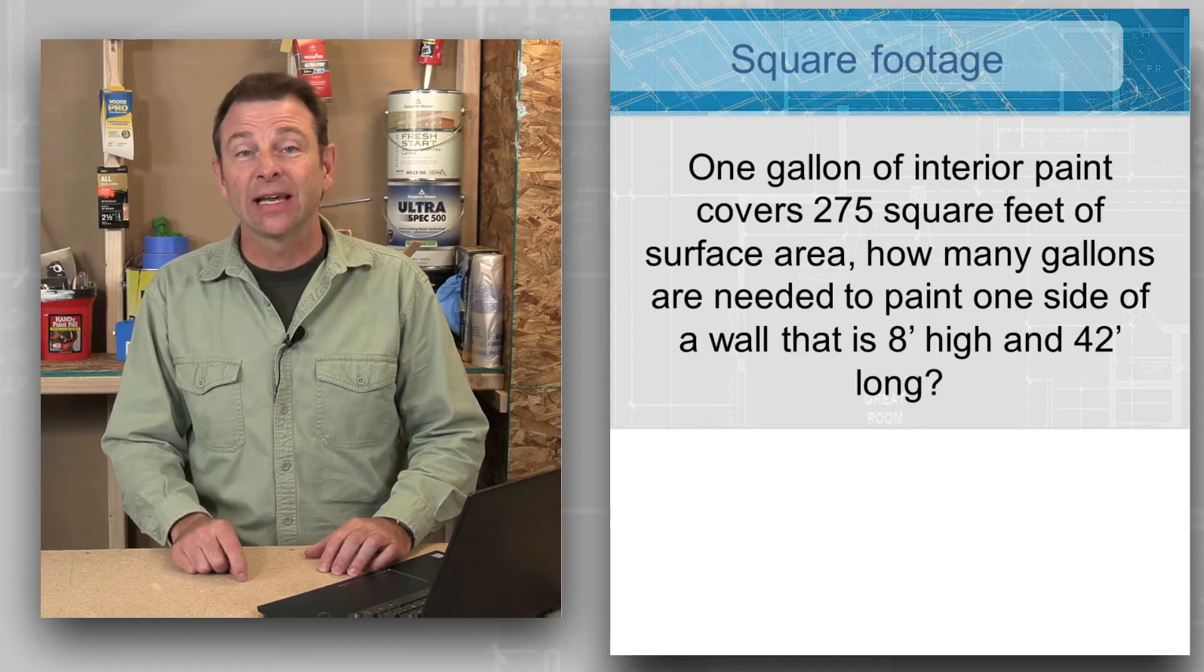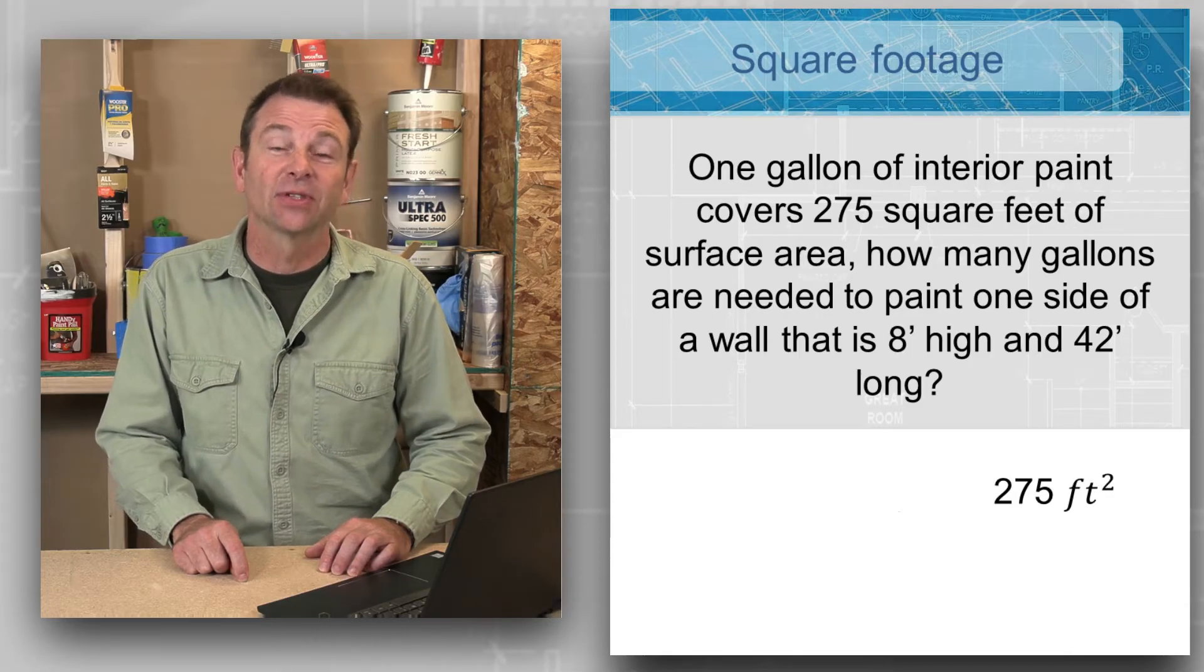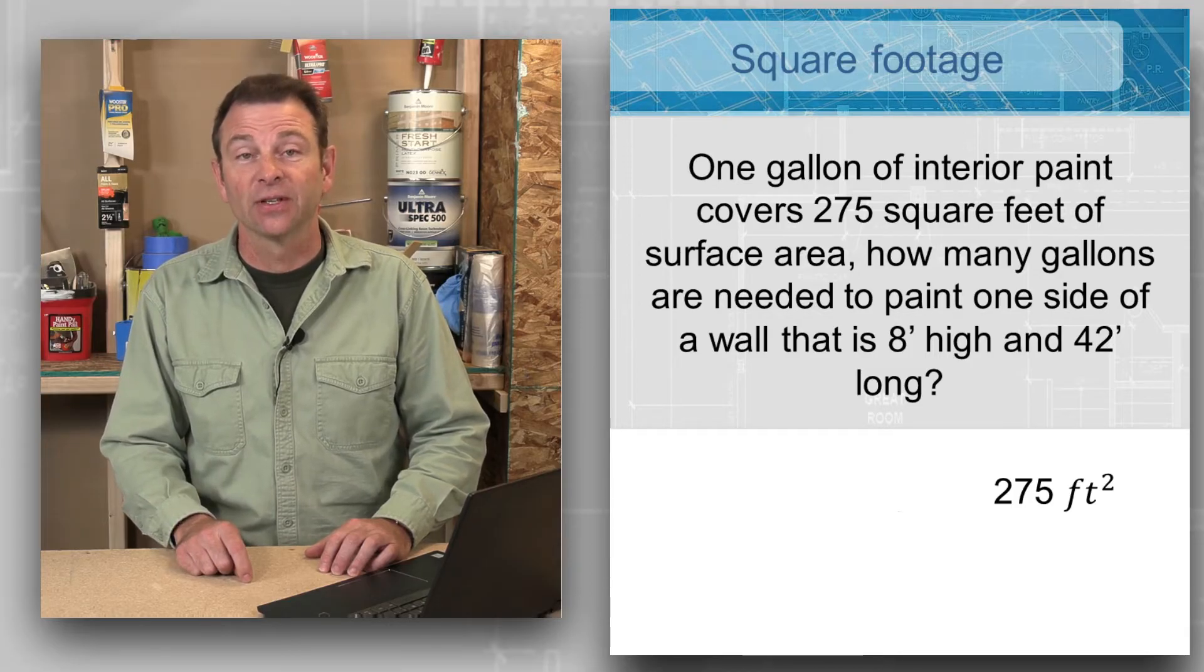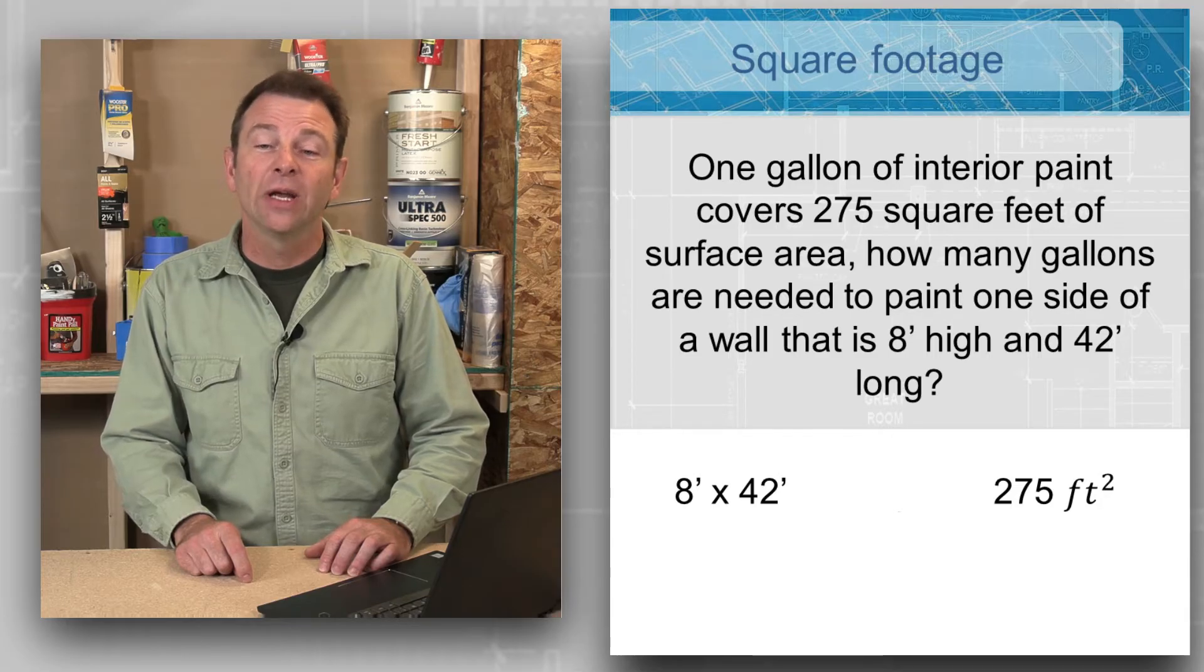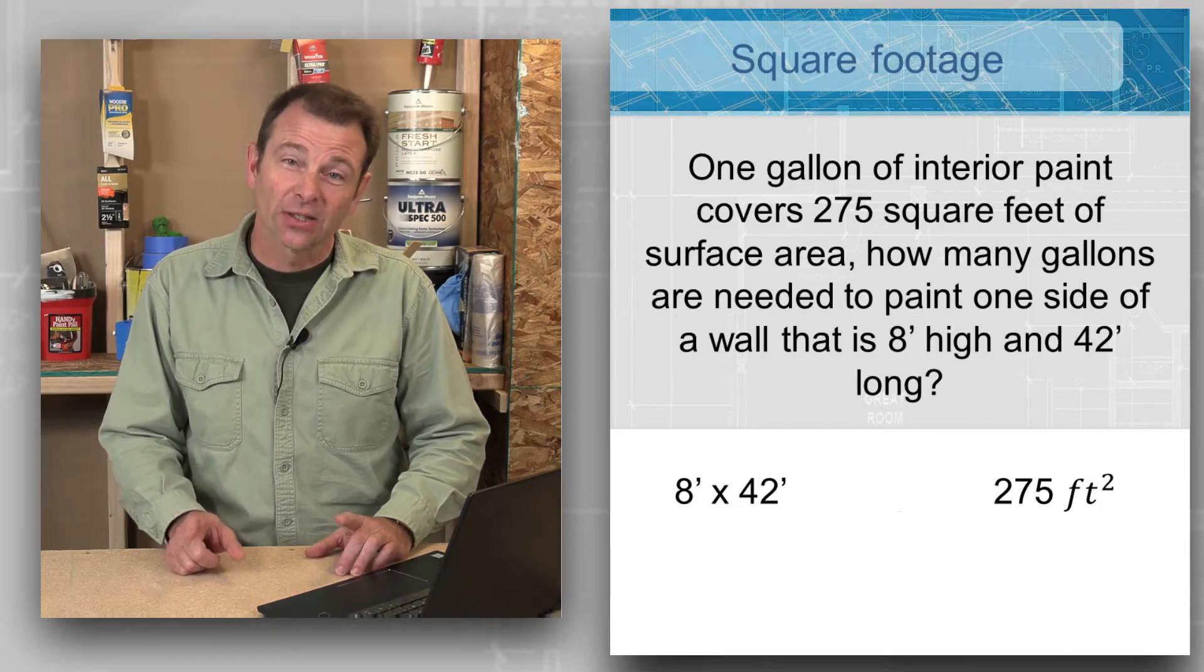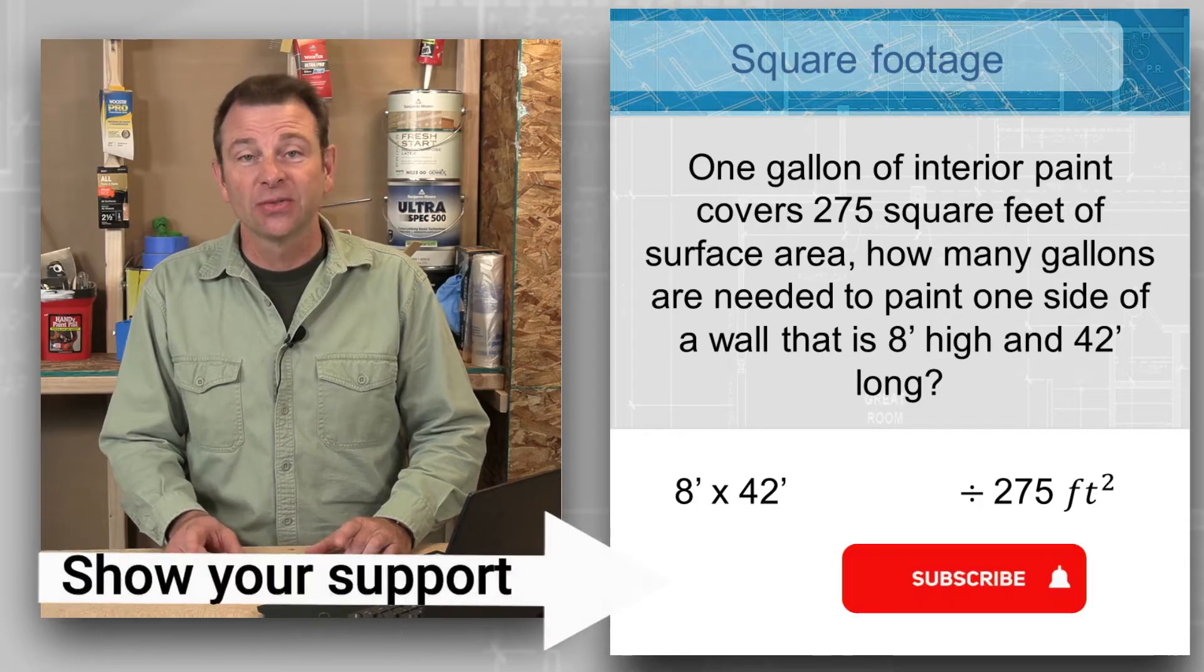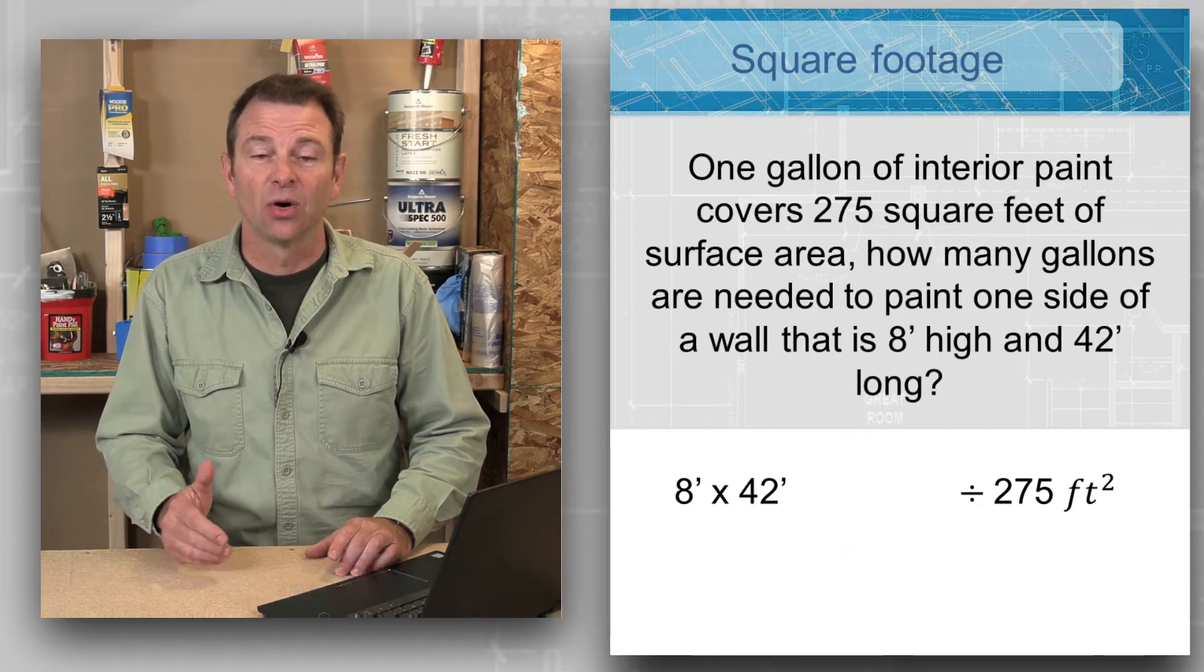So what do we know? We know that each gallon is going to cover 275 square feet. We also know the size of our surface: it's eight feet tall by 42 feet long. So we need to figure out what is the square footage of that surface area first, and then we need to divide it by our 275. That will give us the number of gallons we need to coat this wall.